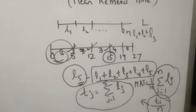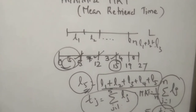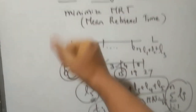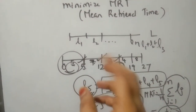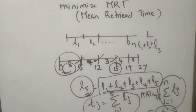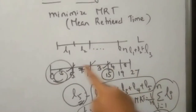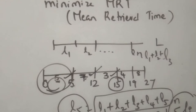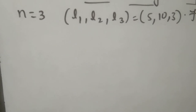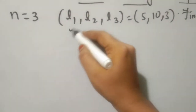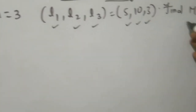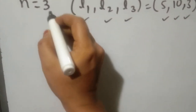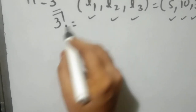So we have n programs, and each program has a length Li stored on the tape. Sometimes the total lengths of all programs must be less than or equal to the total length of the tape. Now, in this problem we have 3 programs with lengths L1=5, L2=10, L3=3. We need to find the mean retrieval time. Without the greedy approach, we would check all possible orderings — that is 3 factorial = 6 arrangements.